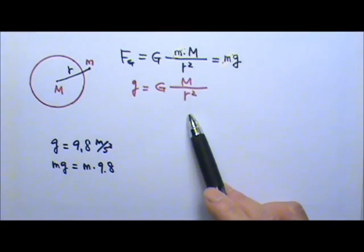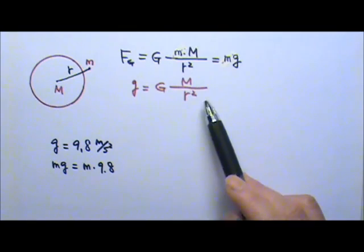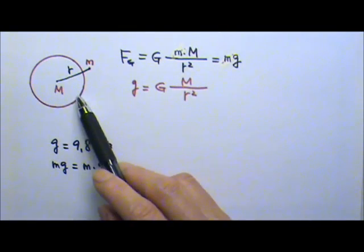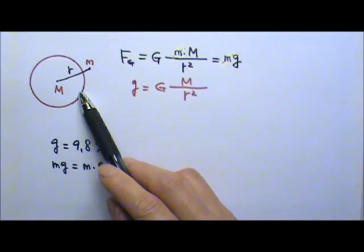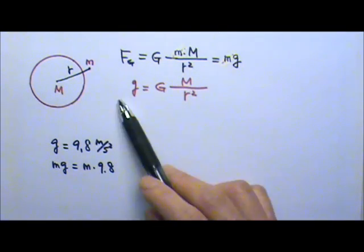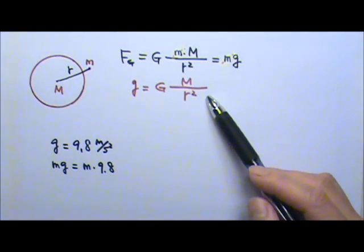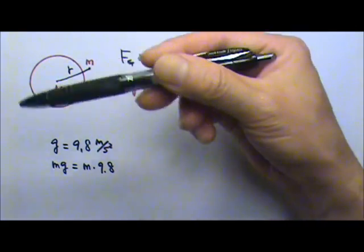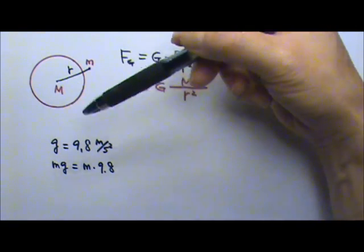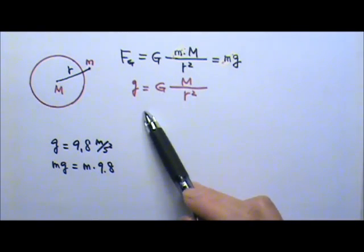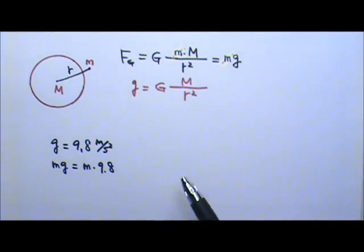So there are no discrepancies. If we plug in numbers for the surface of the Earth into this equation and take into consideration the effect from the Earth's spin, we will get about 9.8 for the effective g.